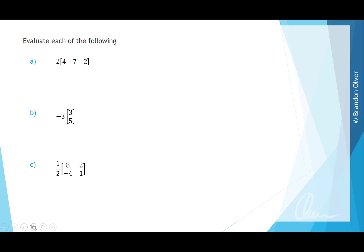For scalar multiplication examples: for part A, we multiply every entry by 2: 2 times 4 is 8; 2 times 7 is 14; 2 times 2 is 4. For part B, we multiply every entry by negative 3: negative 3 times 3 is negative 9; negative 3 times 5 is negative 15. For part C, we multiply every entry by one half: one half times 8 is 4; one half times 2 is 1; one half times negative 4 is negative 2; one half times 1 is one half.